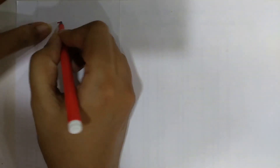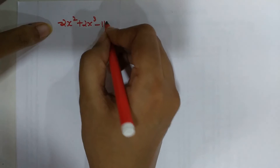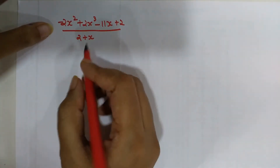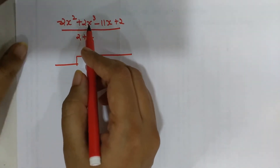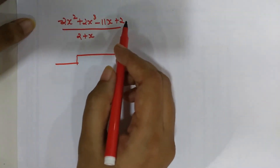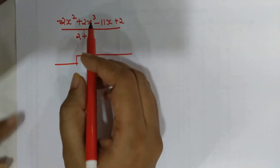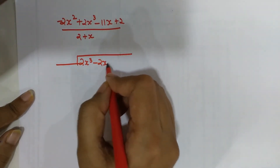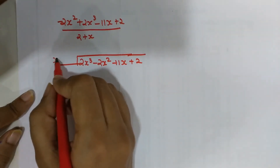Now let's do another long division. We have negative 2x squared plus 2x cubed minus 11x plus 2, divided by 2 plus x. Nothing is common, so we can start directly. However, the highest degree term is not first, so we must reorder: writing 2x cubed first, then minus 2x squared, minus 11x, plus 2. The divisor 2 plus x is rewritten as x plus 2.